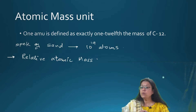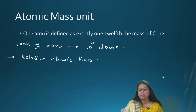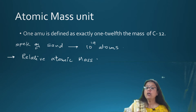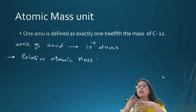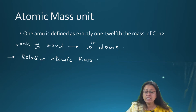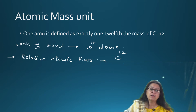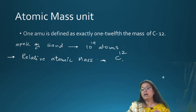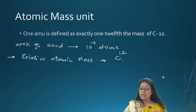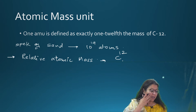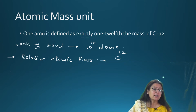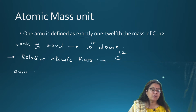We use the relative atomic mass. Relative means in relation to something. There was a history — hydrogen was used first, then discarded, then oxygen was used. Now according to IUPAC, the International Union of Pure and Applied Chemistry, we take Carbon-12 — carbon with atomic mass 12 — as our reference. So AMU, atomic mass unit, is defined as exactly one-twelfth the mass of Carbon-12.